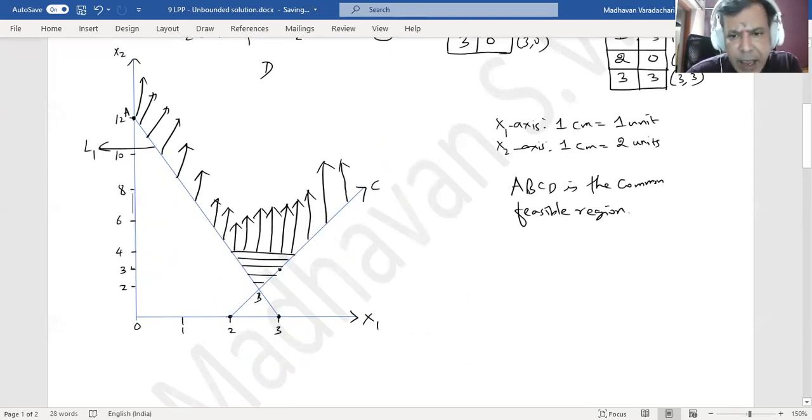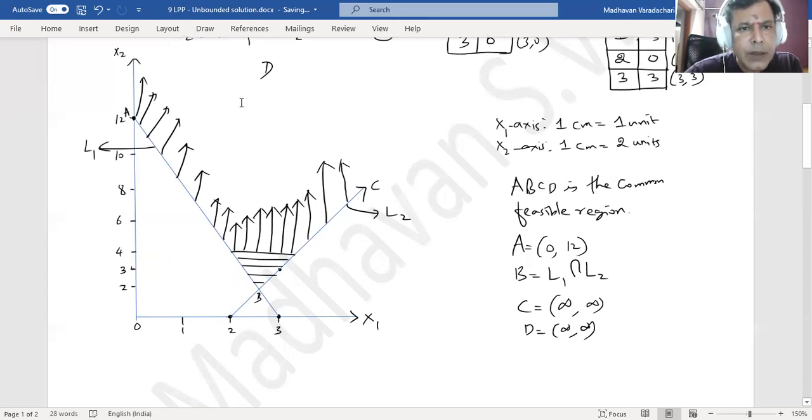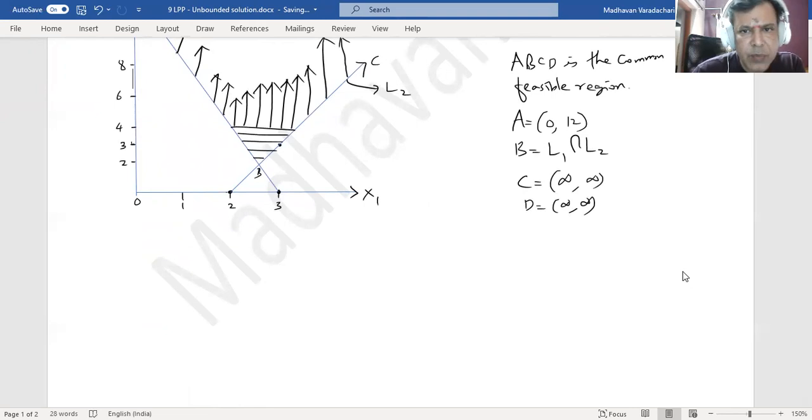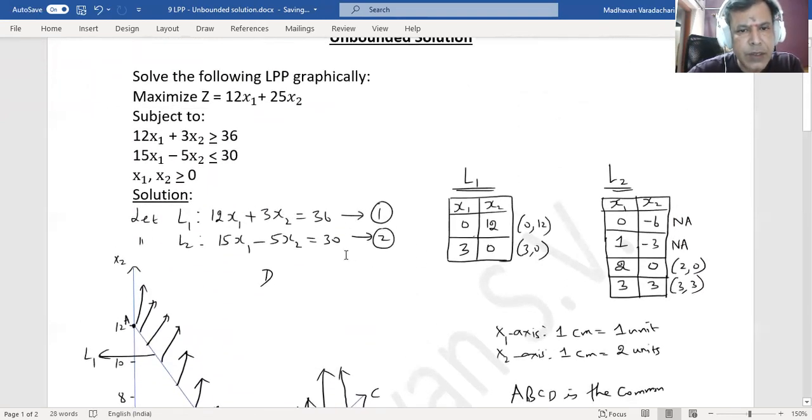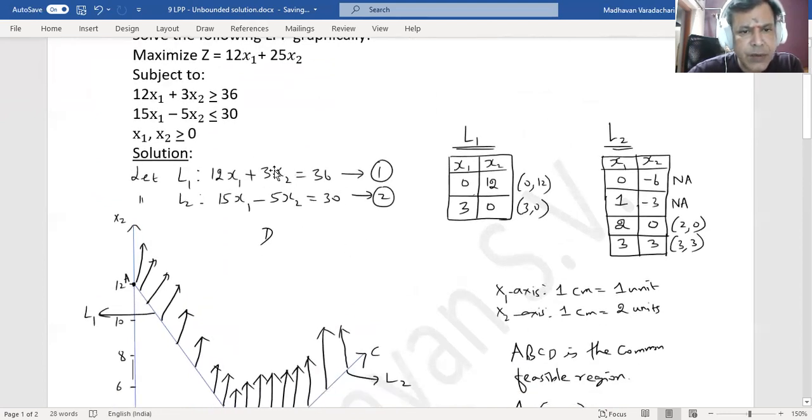Okay, now what is A? A you may notice is x₁ as 0, x₂ is 12. What is B? B is the intersection of line 1 and line 2. What is C? C is actually going—I mean, I can say it is never-ending, so I can say that as infinity comma infinity. Even D is also infinity comma infinity, because D is somewhere here, somewhere unknown—I simply put it, but it is actually unknown. Now let us find out what is point B. How do we find point B? By solving these two equations 1 and 2. One thing we may notice: if I multiply the first equation by 5, this will become positive 15. If I multiply second equation by 3, it will become negative 15.